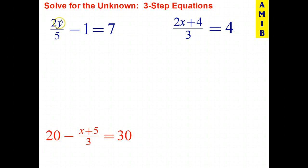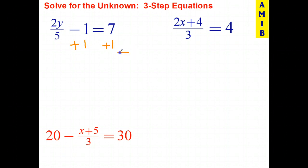Here we have y, and the operations are: whatever number that is has been multiplied by 2, the answer's then been divided by 5, and then 1 was subtracted. So to solve that equation, we undo adding and subtracting, and we undo multiplying and dividing. So the first step is to undo subtracting 1, which is adding 1.